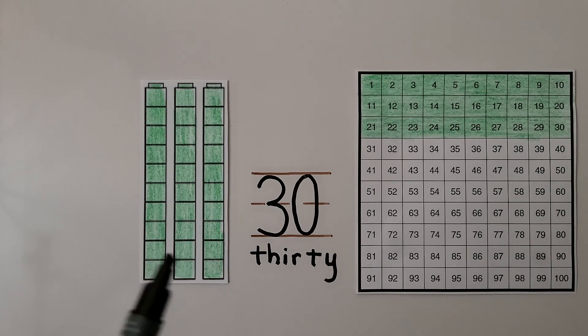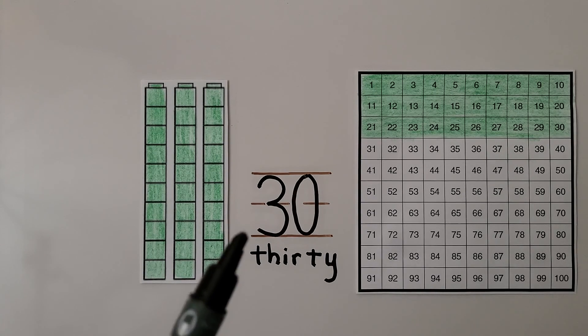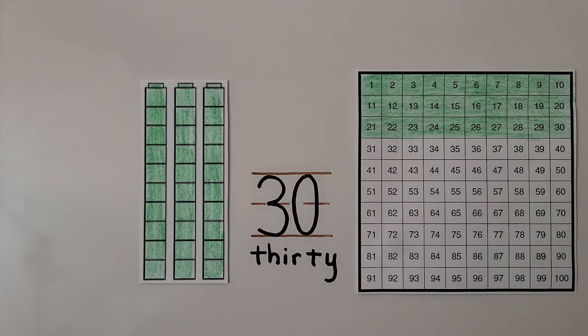Three sets. This shows 30. We can turn the cube towers on their side to see how they look like 3 rows of 10 on a 100 chart.